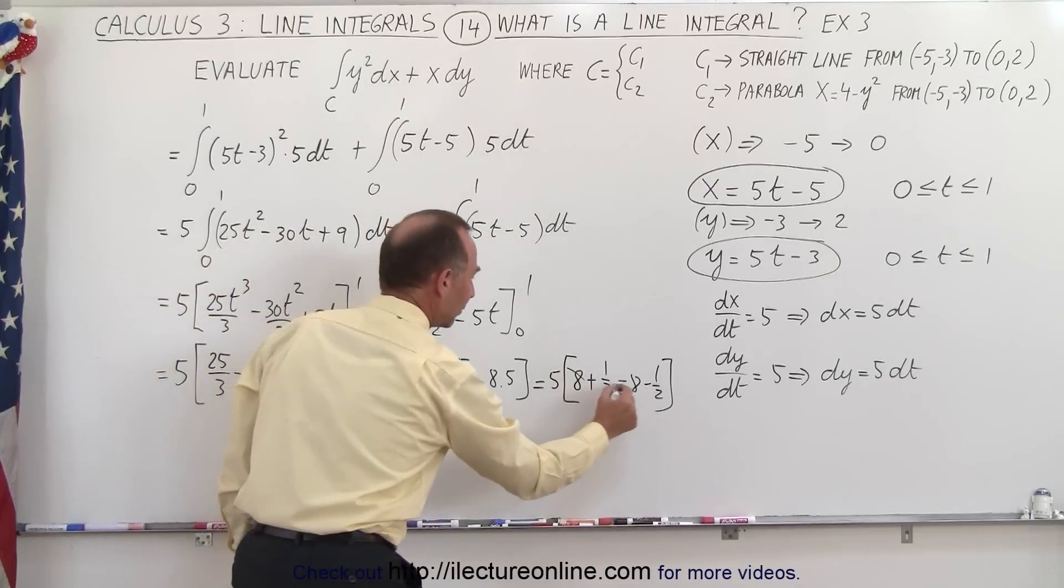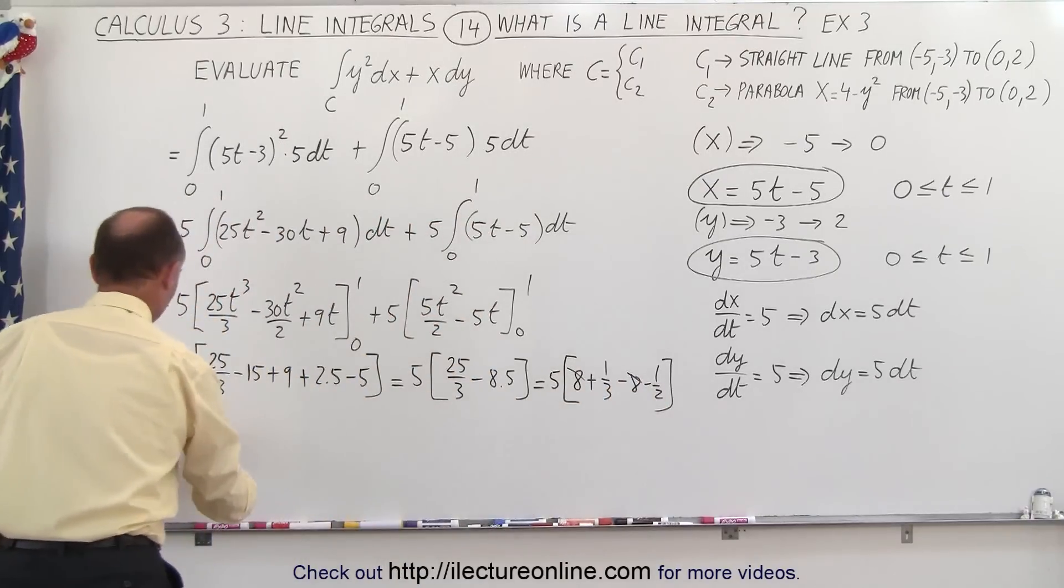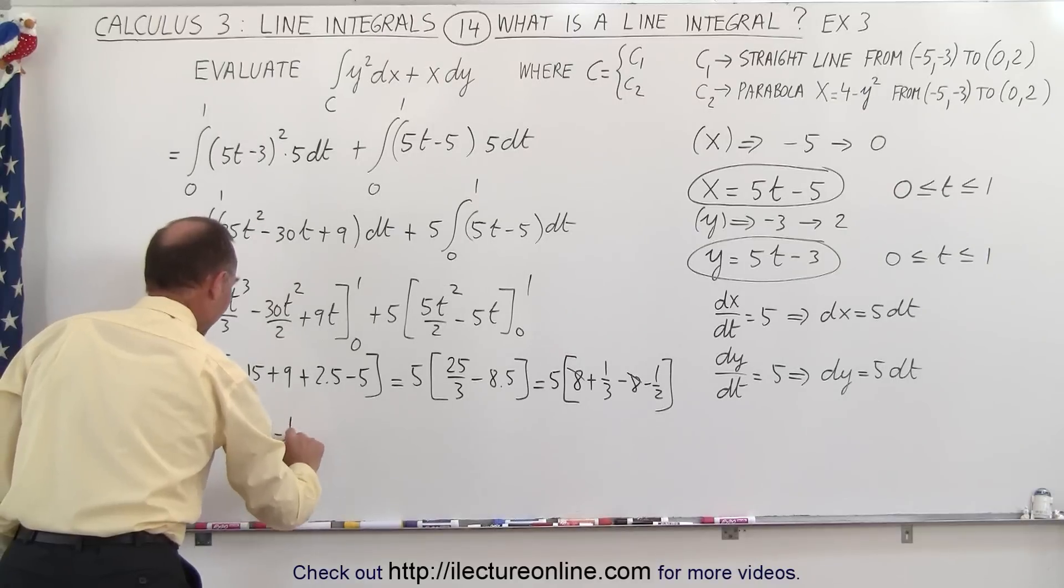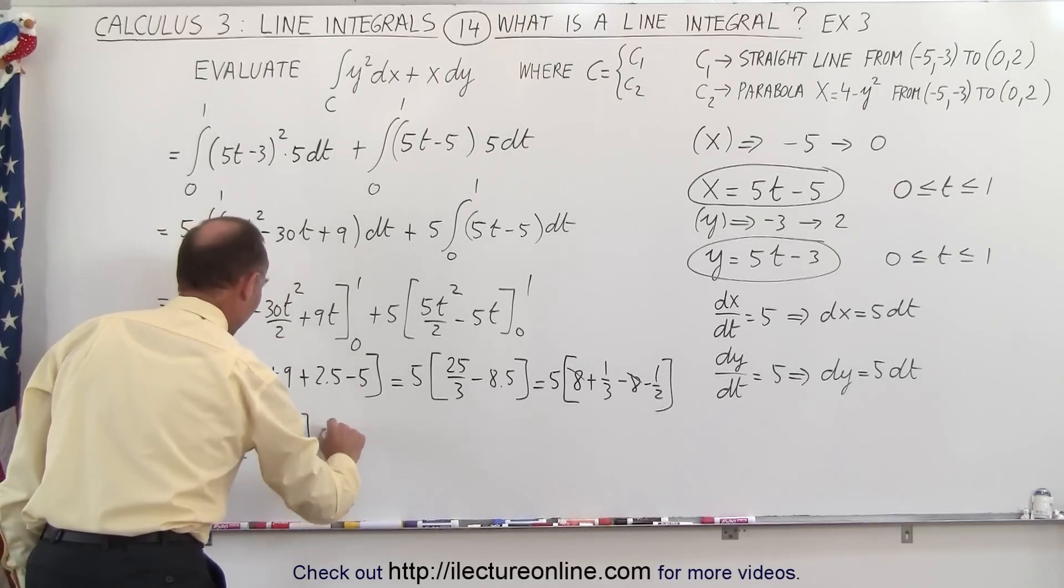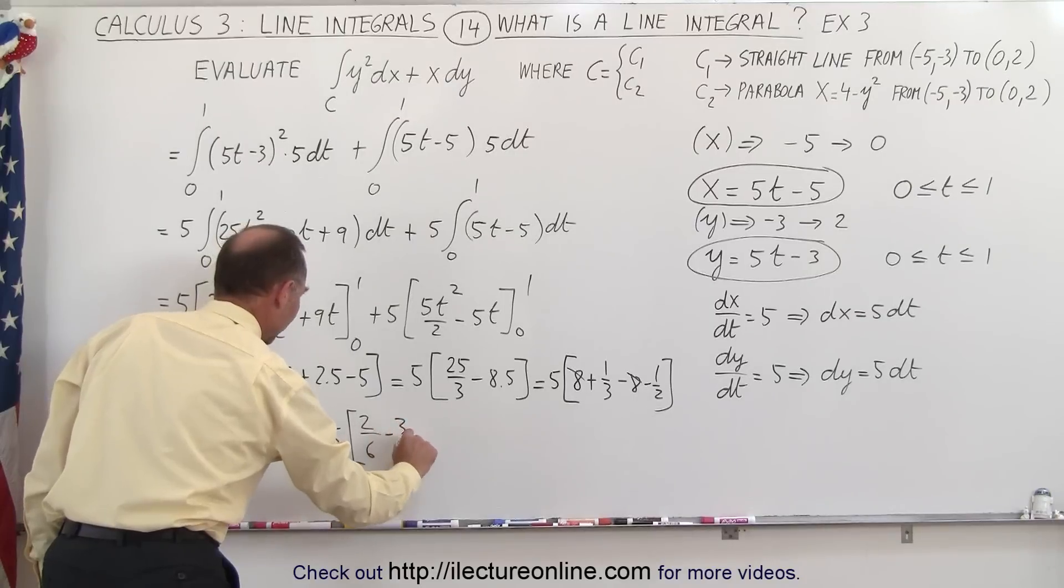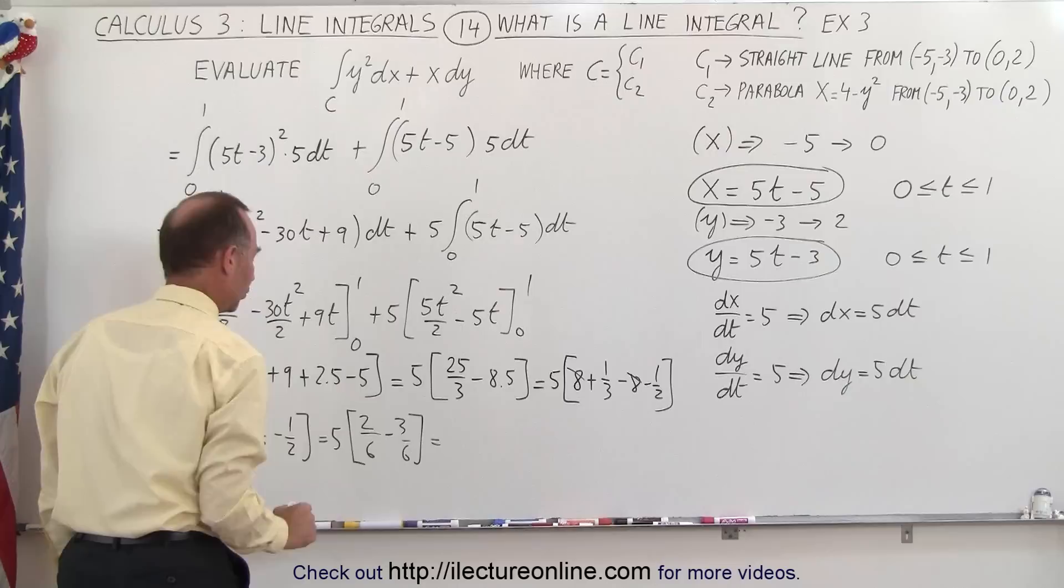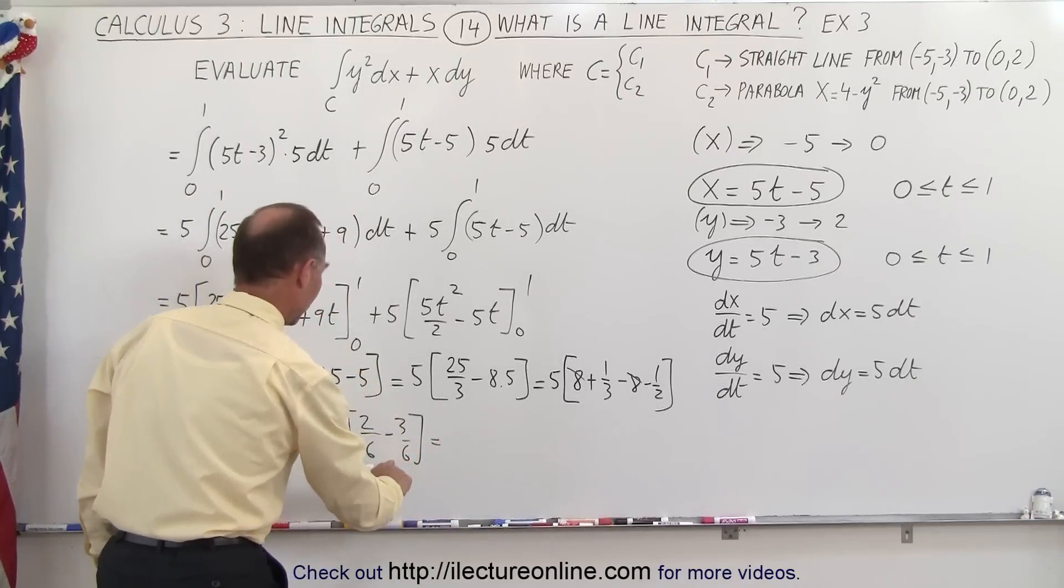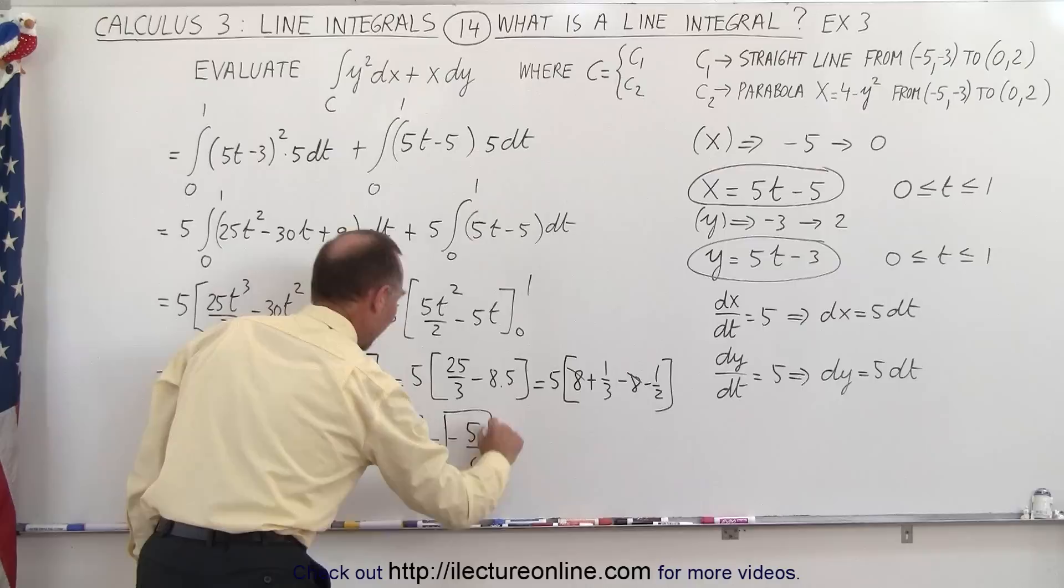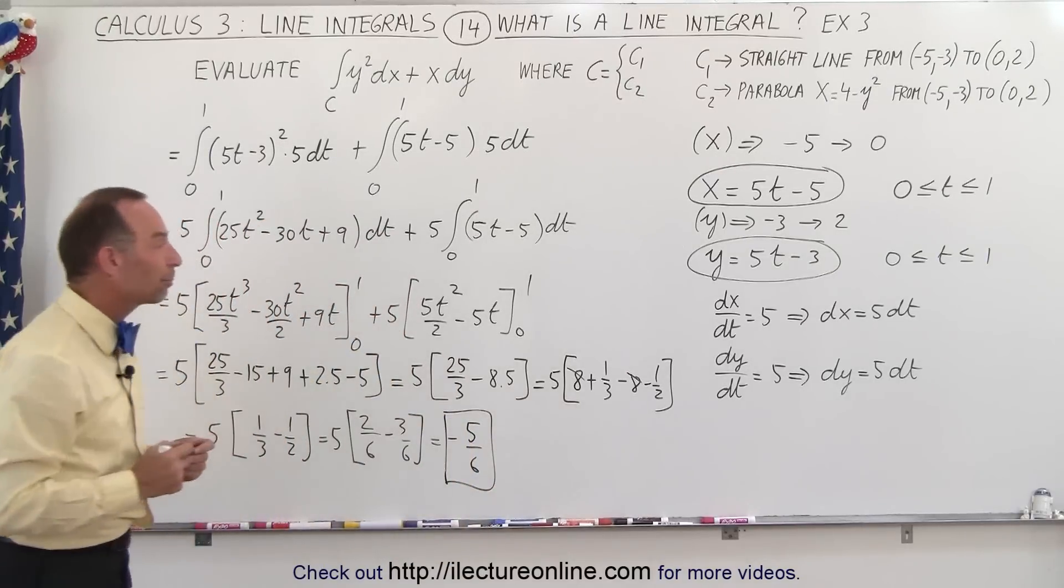The 8's cancel out, so I end up with, this is equal to 5 times 1 third minus 1 half, which is equal to 5 times 2 sixths minus 3 sixths, which is equal to minus 1 sixth times 5, or minus 5 over 6. And that is the result of that particular integral.